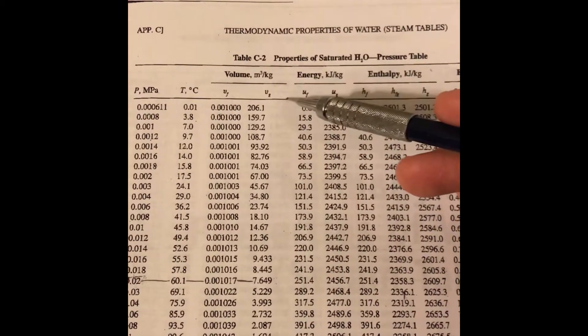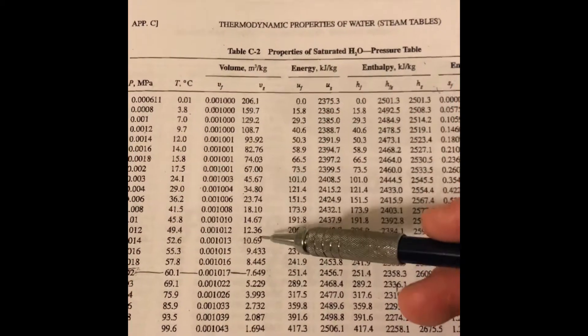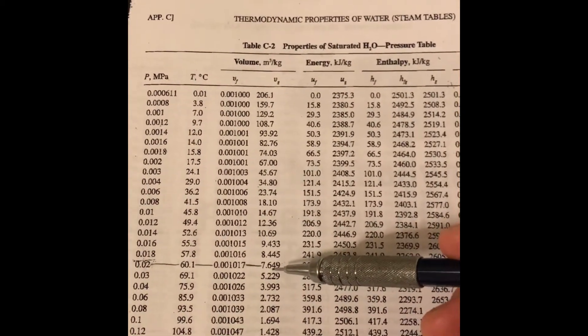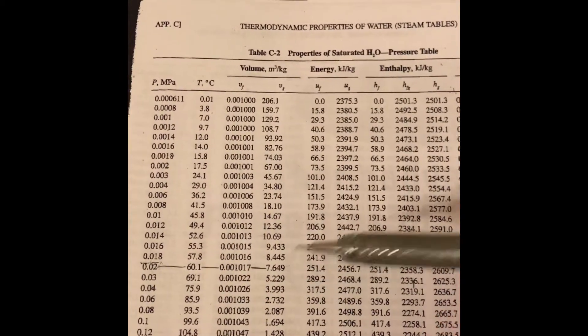Then you would find specific volume of the gas, which is notated as little v sub g, and that is at 0.02 MPa, 7.649 meters cubed per kilogram.